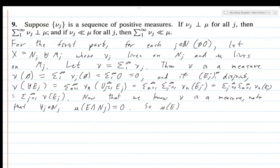So mu of E is going to be less than or equal to mu of the union from 1 to infinity of E intersected with N_j's because the union of these things is just E. And this is equal to the sum from 1 to infinity of mu of E intersect N_j, sum from 1 to infinity of 0 and that's 0.